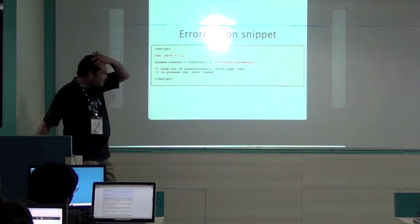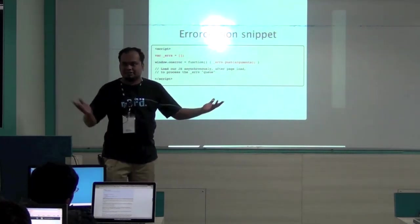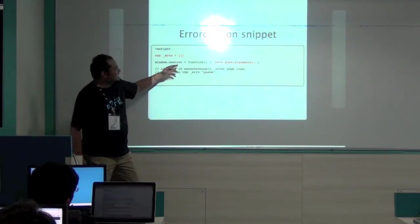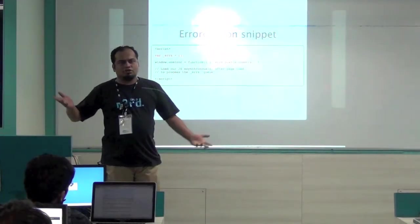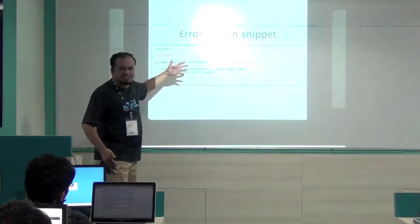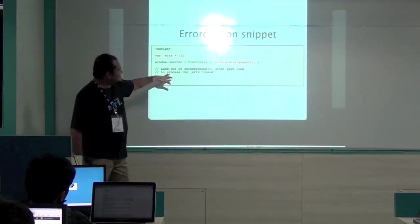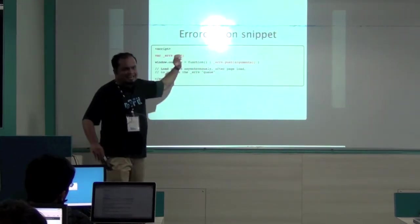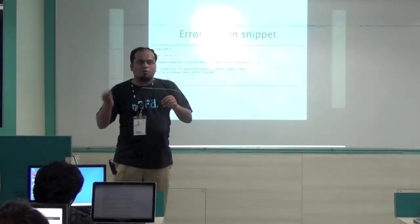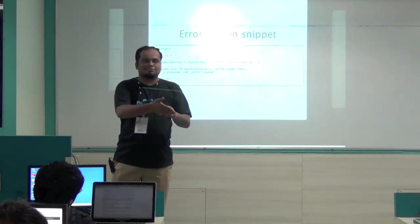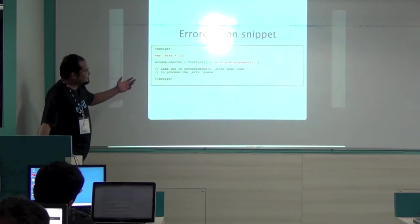Errorception uses the same pattern — it's also a queue because it's a write-only API. Every time there's an error, it gets pushed to the queue, and when the JavaScript loads it processes the queue. One trick I use: after the code loads, I replace the array with an object that has only one method called .push. That way, I don't have to poll the queue; the moment something is pushed, I instantly know and can buffer and send it. Google Analytics does the same thing — if you ever read their minified code, they also convert the GAQ array into an object with a single .push method.